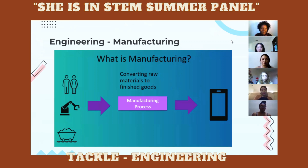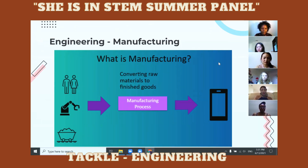I have a specific field of engineering, which is manufacturing. A lot of people don't know: manufacturing is taking people, machinery, and raw materials, processing them, and then making them into a final product. So it's a very specific part of engineering.